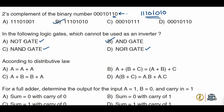Next question: according to distributive law, the correct expression is option B — that is, A·(B + C) = A·B + A·C.